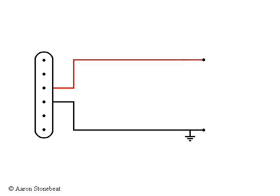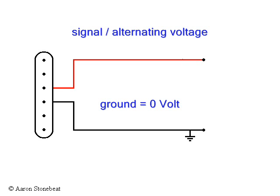The other side connects to the sleeve of the guitar cable, and this side is called the ground or earth. The ground side always has zero voltage, so the real business is done at the signal side.